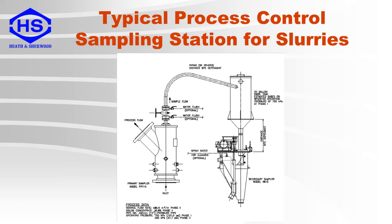Here we have an example of a pressure pipe sampler for process control. Inside the sampler is a fixed nozzle which collects a portion of the stream as the sample. The sample then goes into a swirl tank to dissipate any pressure before going to a secondary sampler.